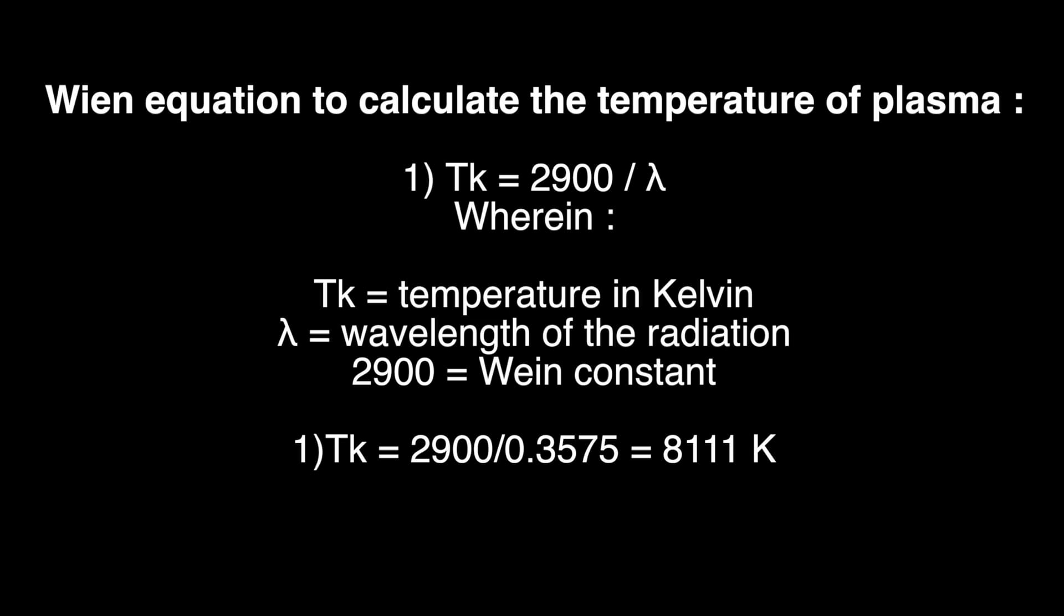Substituting in the equation, we have the temperature is 2900 divided by 0.3575, which is the wavelength that you have seen in the spectrometer reading. Note that the spectrometer displayed 357, but that was in nanometers.